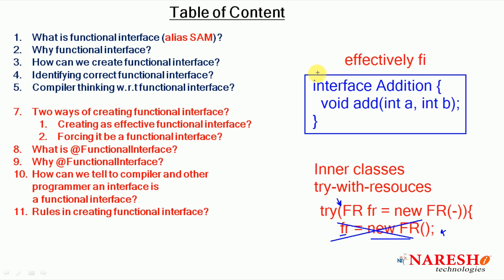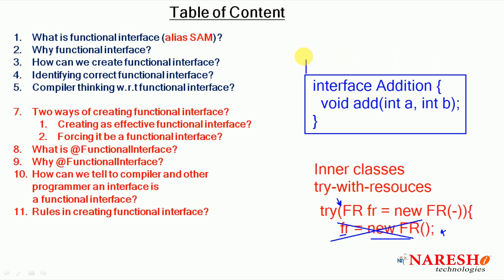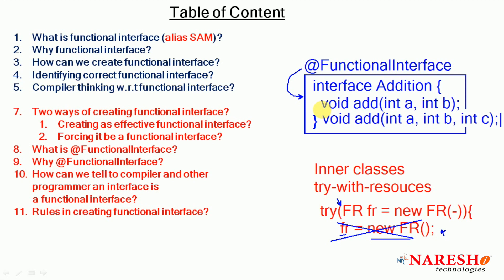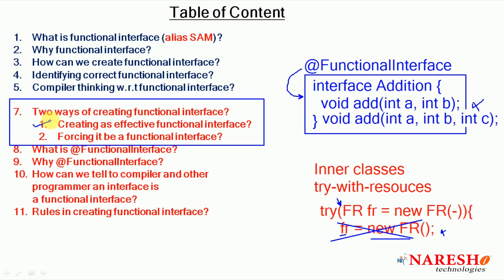What is the meaning of effectively functional interface? You create one interface with only one abstract method — then it is called a functional interface. Because you have not explicitly declared it, we call it an effectively functional interface. There are two ways to create a functional interface: number one, creating an interface as effectively functional, and number two, forcing it to be a functional interface.